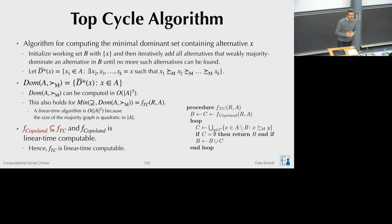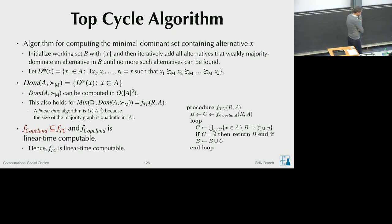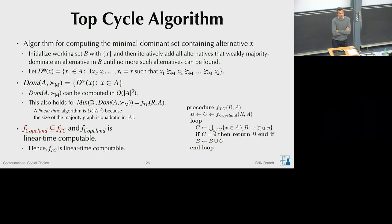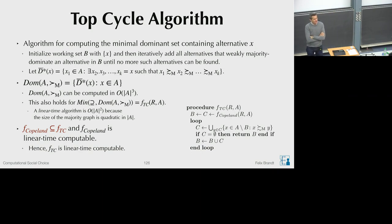Let me start with a brief outline of today's lecture. We continue talking about the top cycle, which we introduced last week. We are going further on this escape route, weakening the expansion consistency condition beta plus to gamma, and seeing that this condition characterizes the uncovered set — a very interesting social choice function that only depends on the majority relation, just like the top cycle does.